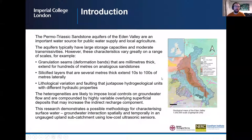The Permo-Triassic Sandstone Aquifers of the Eden Valley are an important water source for public water supply and local agriculture. The aquifers typically have large storage capacities and moderate transmissivities. However, these characteristics vary greatly on a range of scales.